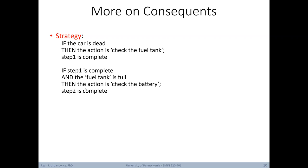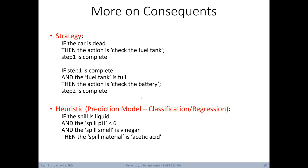Consequences can also set up a higher-level strategy. For example, if the car is dead, then check the fuel tank and add that step one is complete. Another rule might say: if step one is complete and the fuel tank is full, then check the battery. Lastly, consequences can be used as heuristics for prediction — if the spill is liquid, the spill pH is under 6, and the spill smell is vinegar, then the spill material is acetic acid. Depending on certainty of facts, this prediction can range from 100% confidence to something much lower.